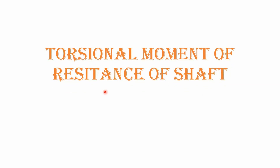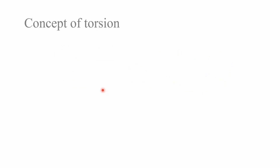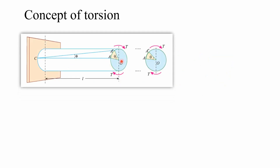This is a video lecture on torsional movement of resistance of a shaft, which we study in mechanics of structures. Let us first discuss the concept of torsion. Here is a shaft of diameter d and length l. The shaft is fixed at point C, and at the other end the shaft is subjected to a twisting moment T. There is a twisting deformation occurring along the length of the shaft, and theta is the angle of twist.